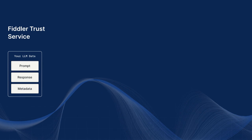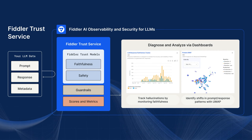Fiddler Trust Service allows your team to moderate your AI applications in real time by preventing attacks like prompt injections from ever reaching your application and your model in the first place, and making sure the responses generated for the users are reliable and not hallucinating and in compliance with your team's policies.